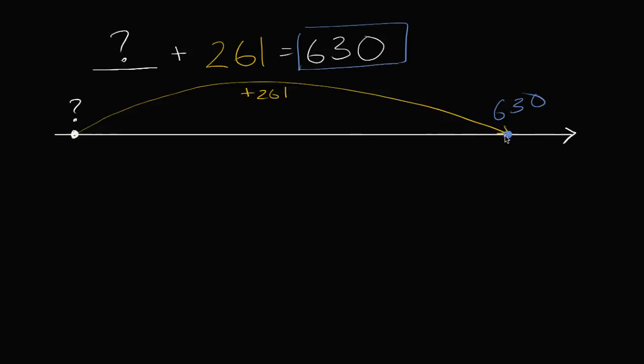Which means that if we started at 630, and we were to subtract 261, if we were to go the other way, subtract 261, so let's do that. So minus 261, minus 261, we're gonna get back to blank. We're gonna get back to our question mark.